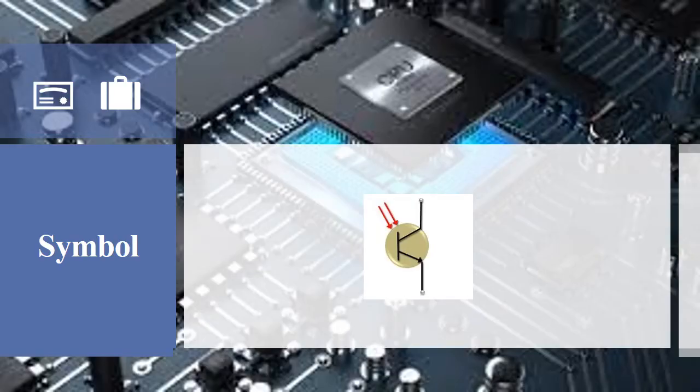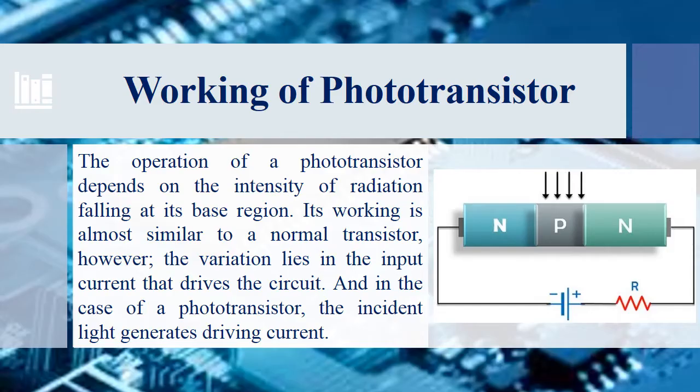Here we have the symbol of the phototransistor. In this symbol, you again have three regions: base, emitter, and collector. The arrows on the base indicate incident light. Moving to the working of the phototransistor: the operation depends on the intensity of light radiation which falls on the base.